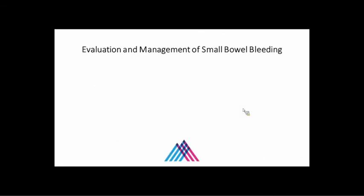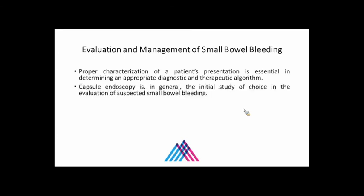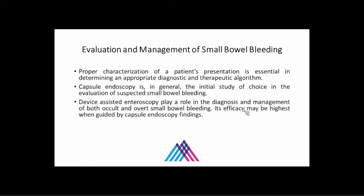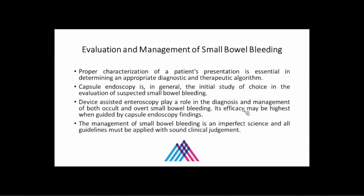A couple of parting words: proper characterization of the patient's presentation is essential in determining the appropriate diagnostic and therapeutic algorithms. Is the patient having overt or occult bleeding? How brisk is the bleeding? That guides what study you do. Capsule endoscopy is generally the initial study in the evaluation of suspected small bowel bleeding. Device-assisted enteroscopy — double balloon or single balloon — plays a role in diagnosis and management of both occult and overt small bowel bleeding, and efficacy is highest when guided by a positive capsule first. The management of small bowel bleeding is an imperfect science and all guidelines must be applied with sound clinical judgment.